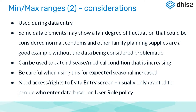MinMax ranges are used during data entry. There are quite a few data elements that can show a fair degree of fluctuation that we would consider normal — family planning supplies, vaccine supplies, drug supplies. This month you got nothing, next month you get 2,000. That can be considered normal and is not problematic. Where you have a disease or medical condition running at very low numbers with a slow uptake, MinMax ranges may help pick that up. However, where you have expected seasonal increases, be careful — an example is malaria or diarrhea in children in the rainy season.